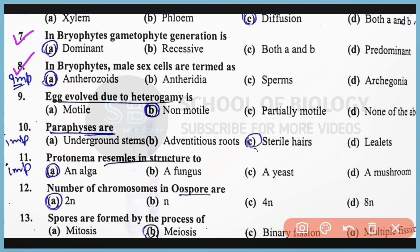The correct answer for Question 8 is Option A. Question Number 9: Egg evolved due to heterogamy is actually non-motile. The correct answer is Option B. Question Number 10: Paraphyses are sterile hairs that are present in the reproductive organs of bryophytes, algae, as well as fungi. The correct answer is Option C.